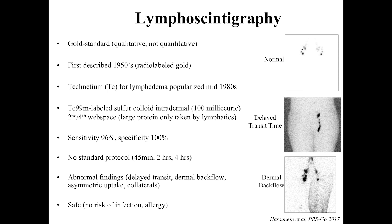What is lymphoscintigraphy? It is the gold standard currently for diagnosing lymphedema. It was first described in the 1950s, became popularized for lymphedema in the mid-1980s, and replaced lymphangiography as the main way to diagnose patients. It's about 96% sensitive and 100% specific. There is no standard protocol; when we started our program at Boston Children's Hospital, we went through the literature, found most patients showed delayed transit at 45 minutes, and came up with two-hour and four-hour time points.